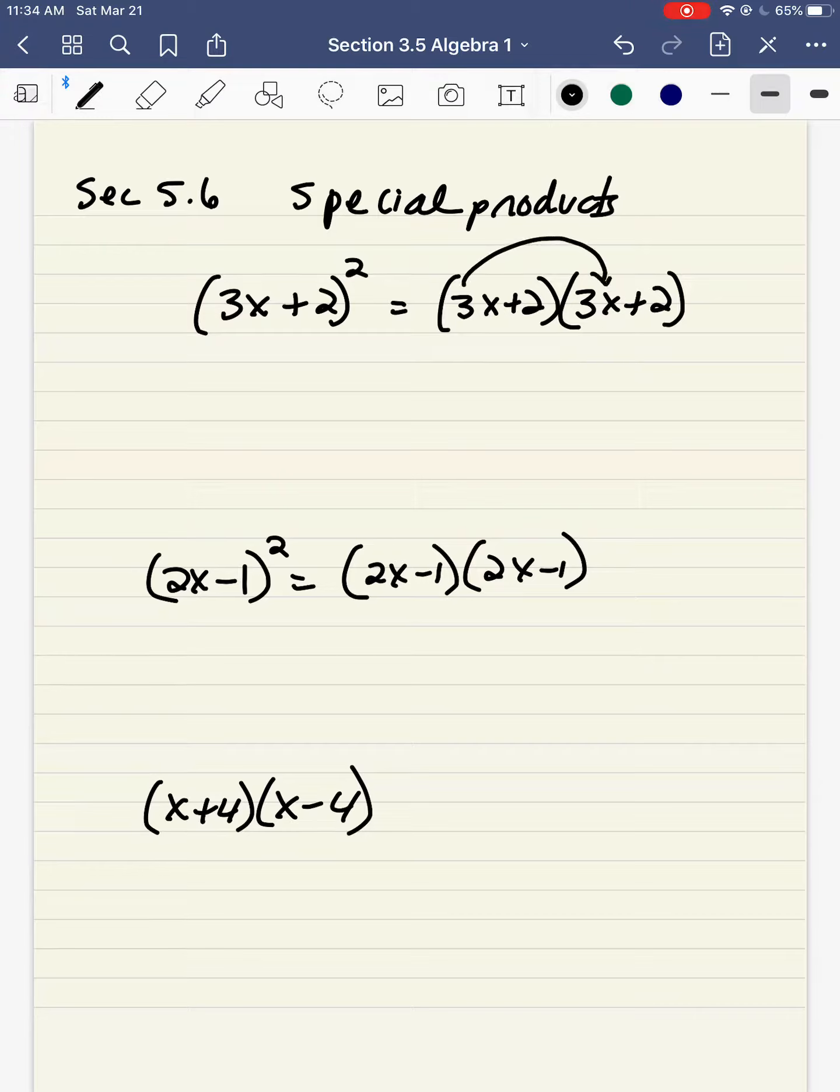So you just have to expand it out and the same rules apply. You distribute the 3x, so 3x times 3x is 9x squared. 3x times positive 2 is plus 6x. Now you distribute the 2. 2 times 3x, that's another 6x, and 2 times 2 is 4.